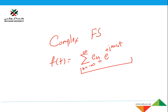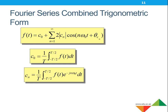We also learned about how we can plot the spectrum of the complex Fourier series. From this, we can derive another expression using other identities, giving us the combined trigonometric form. This form has a separate DC component, which we can calculate in the same way.